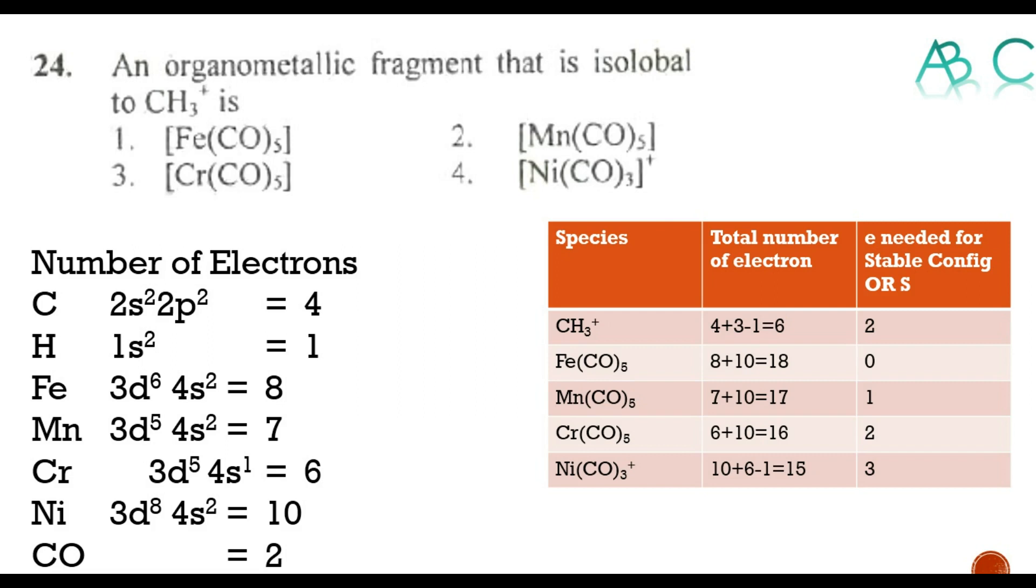For Fe(CO)5 it is an 18 electron species, so zero electrons needed for stable configuration. For Mn(CO)5+ which has 17 electrons, one electron is needed. For chromium pentacarbonyl fragment, 16 electrons are there so it needs two more electrons for 18 electron species. For nickel tricarbonyl with positive charge, 10 plus 6 minus 1 gives 15, so it needs three electrons for stable configuration.